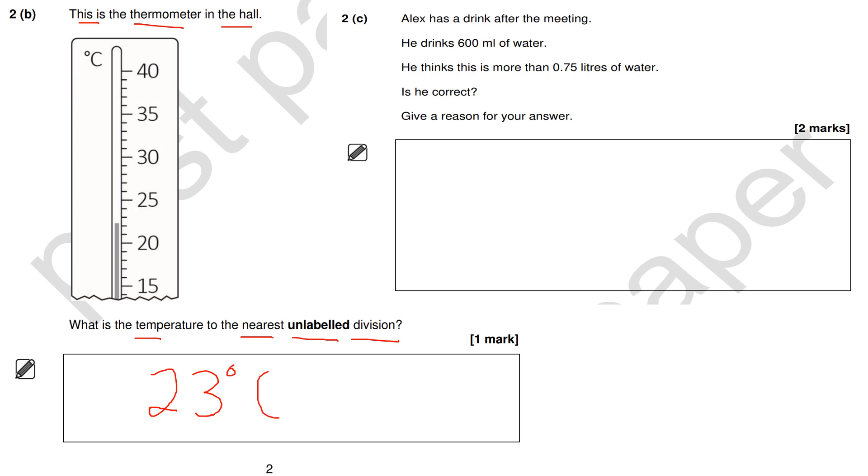Question 2c: Alex has a drink after the meeting. He drinks 600 milliliters of water. He thinks this is more than 0.75 liters of water. Is he correct? Give a reason for your answer.